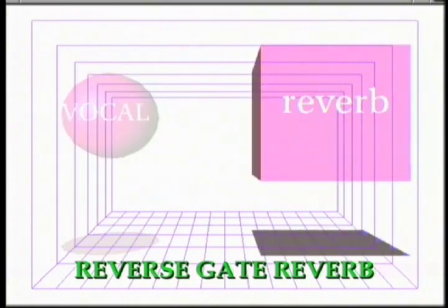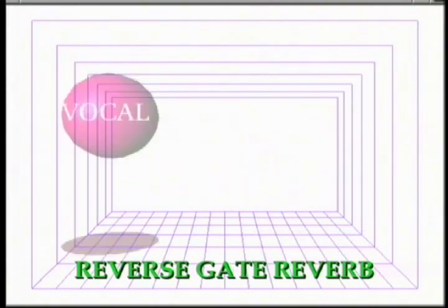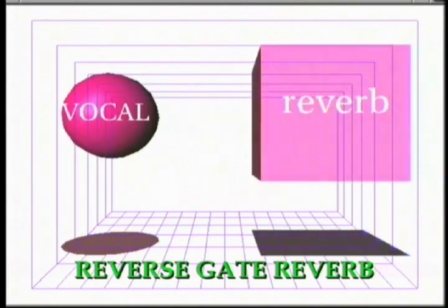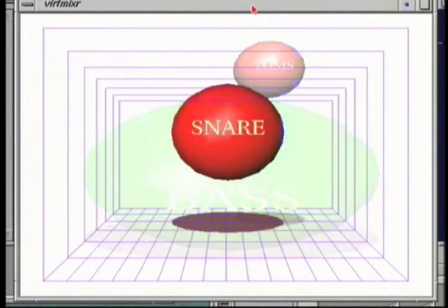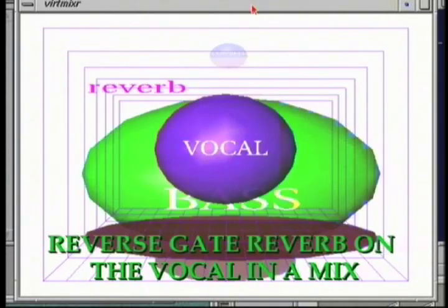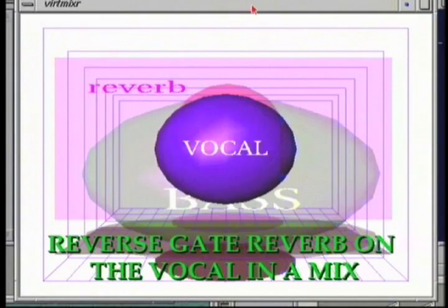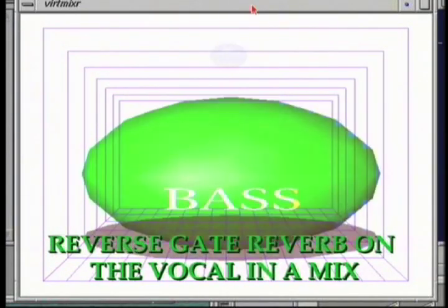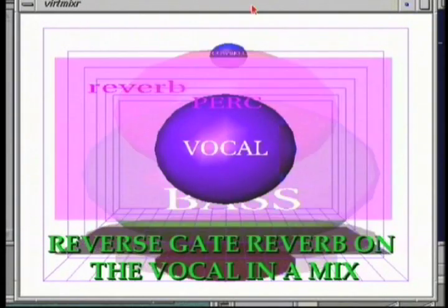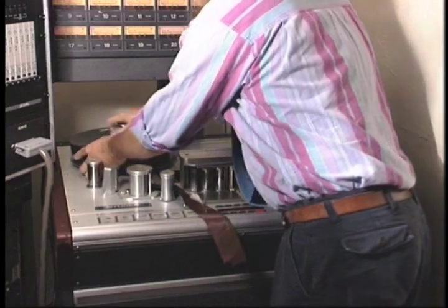It's poetry in motion, she turned her tender eyes to me, as deep as any ocean, as sweet as any harmony, but she blinded me with science and felled me in biology. [Demo: reverse envelope reverb] Now if we were to take the tape and play it backwards, it would sound like this. And if we put reverb on the vocal, record it on some open tracks, then turn the tape around to run forward, we'll get a reverse reverb effect.